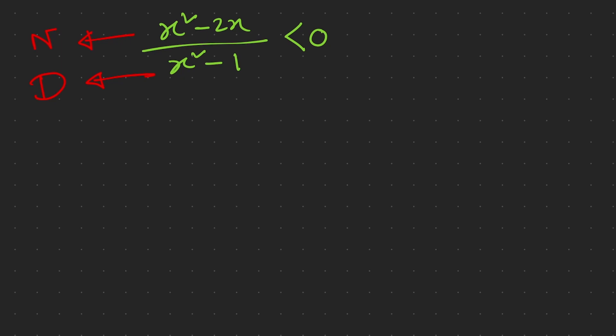We already know from the first tutorial on inequalities that if expression A divided by B is less than zero, this is only valid if the signs of A and B are opposite. If A is negative then B must be positive, giving a negative quotient. Or if A is positive and B is negative, that also gives less than zero. If the signs are the same — both positive or both negative — the result is positive, which is greater than zero, so it's not valid.